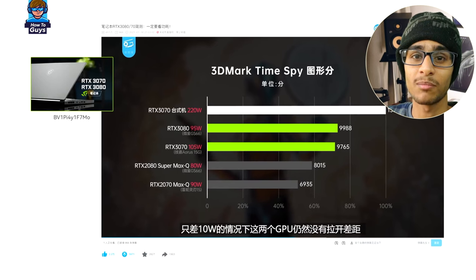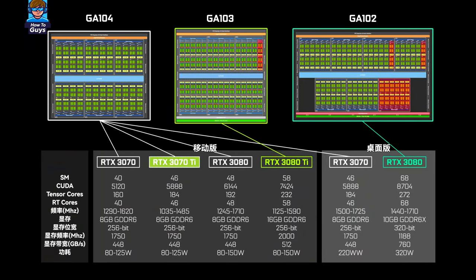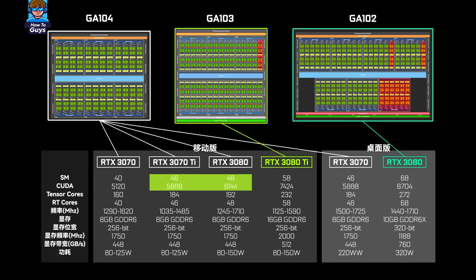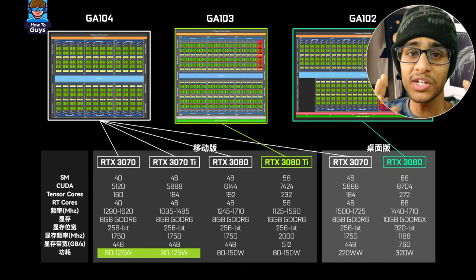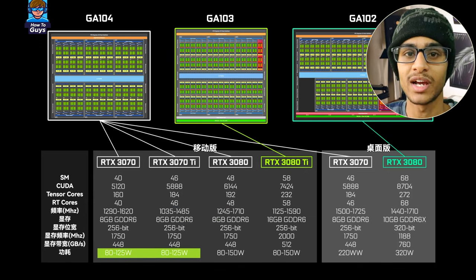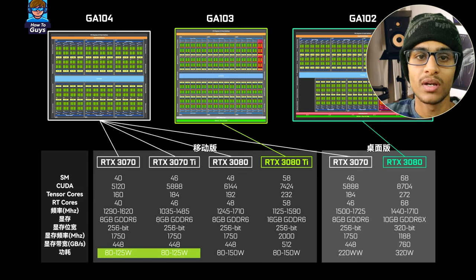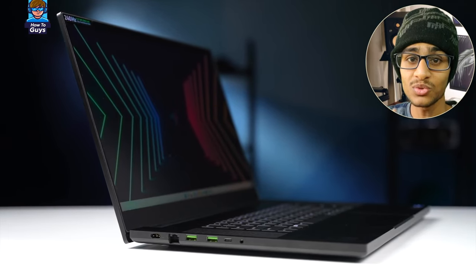We have previously tested 30-series notebooks and found that the bottleneck of this generation of graphics cards is power consumption — if the core doesn't have enough power, there's no possibility of performance. This makes me a bit worried about whether the 3080 Ti with so many CUDA cores can be fully utilized. In addition to the 3080 Ti, Nvidia also launched the 3070 Ti, which uses the GA104 core and is basically the same scale as the notebook 3080, but with the same low 125W power limit as the 3070.